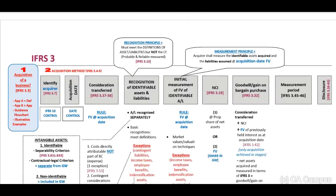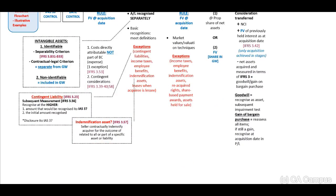The next step is goodwill or gain on bargain purchase. If the parent purchases shares in a subsidiary where the net asset value is R80,000 but the parent paid R100,000, the parent has paid for goodwill. Therefore, if the consideration exceeds the net asset value there will be goodwill; if the consideration is less than the net asset value, there will be a gain on bargain purchase.